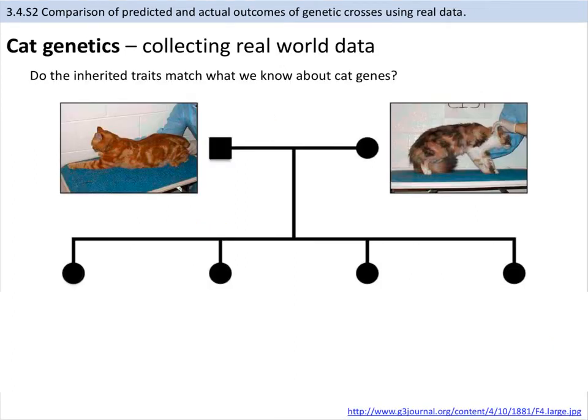A test cross is used by mating the unknown individual with a homozygous recessive individual. The result is either 50-50 if the unknown is heterozygous, or 100% dominant trait if they are homozygous dominant. Now, looking at a real-world application: we have an orange cat and a calico cat. The orange cat is male and the calico — which has orange, brown, black, and white coloration — is female. They reproduce and produce offspring: three appear orange and one is calico, giving a 3 to 1 ratio.